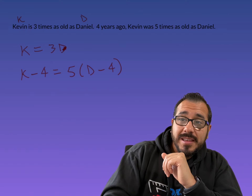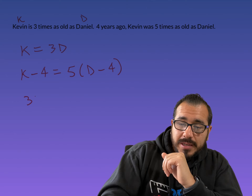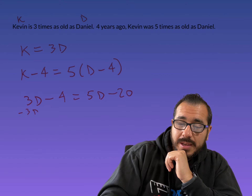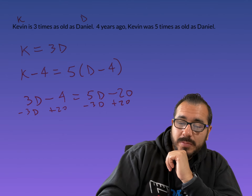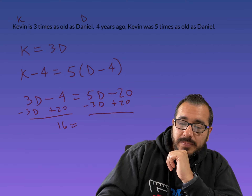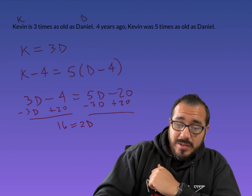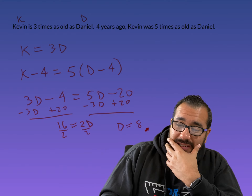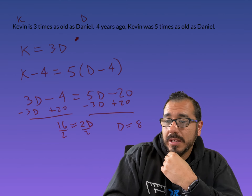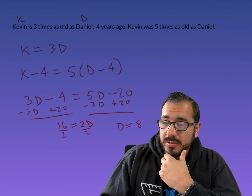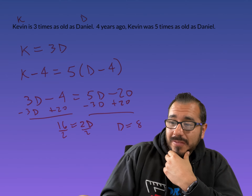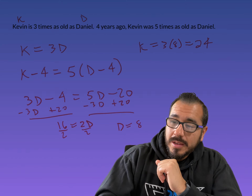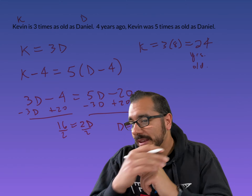Substituting K = 3D: 3D − 4 = 5D − 20. Subtract 3D from both sides, and add 20 to both sides: 16 = 2D. Divide both sides by 2: D = 8, so Daniel is 8 years old. For Kevin, we do 3 times Daniel's age: 3 × 8 = 24. Kevin is 24 years old.